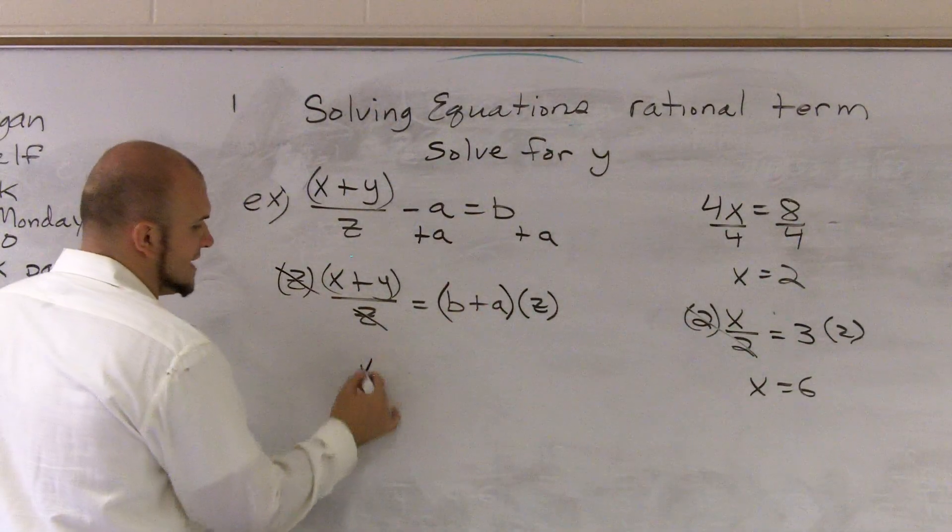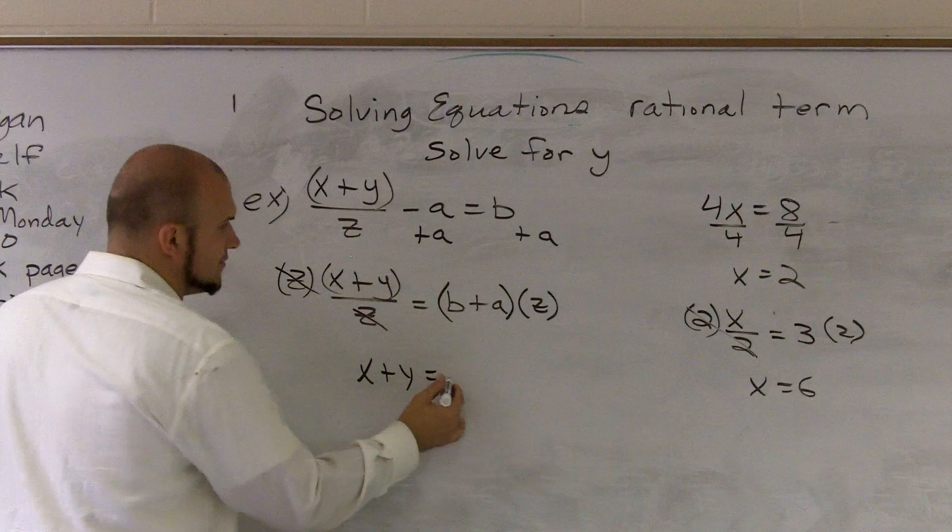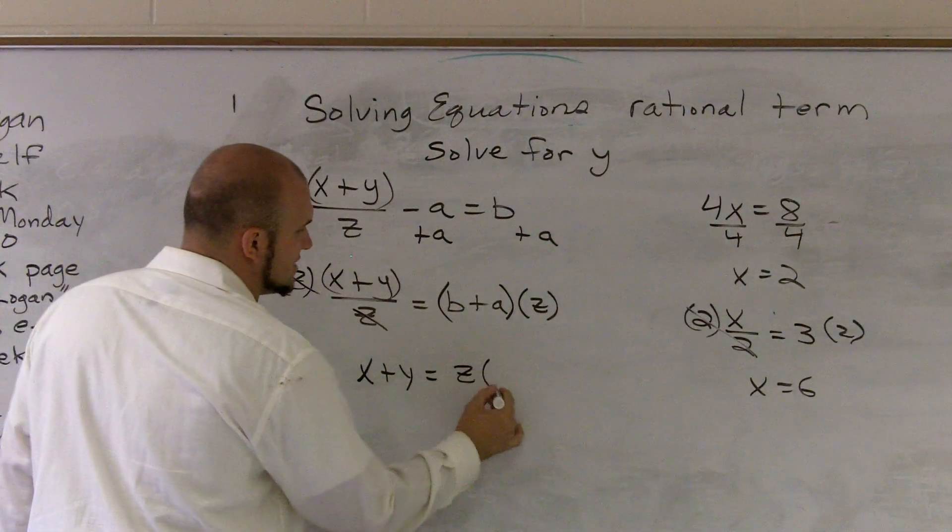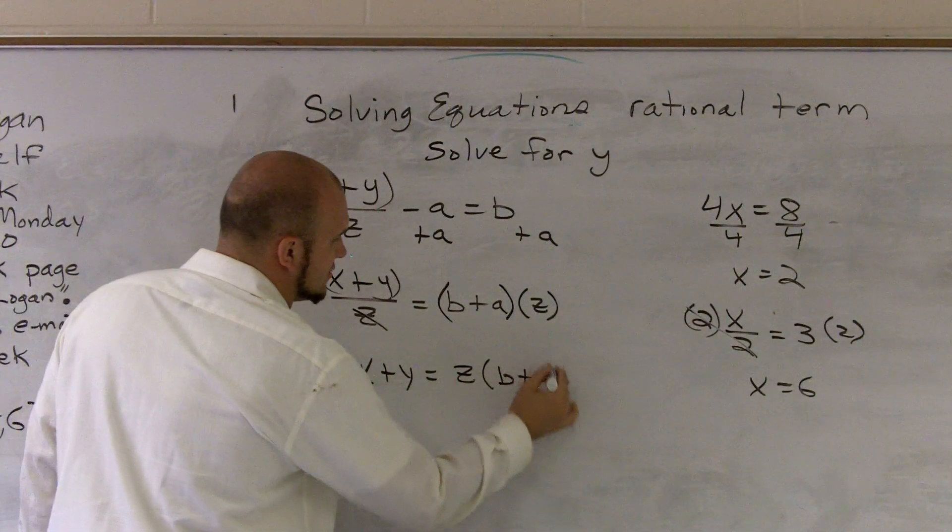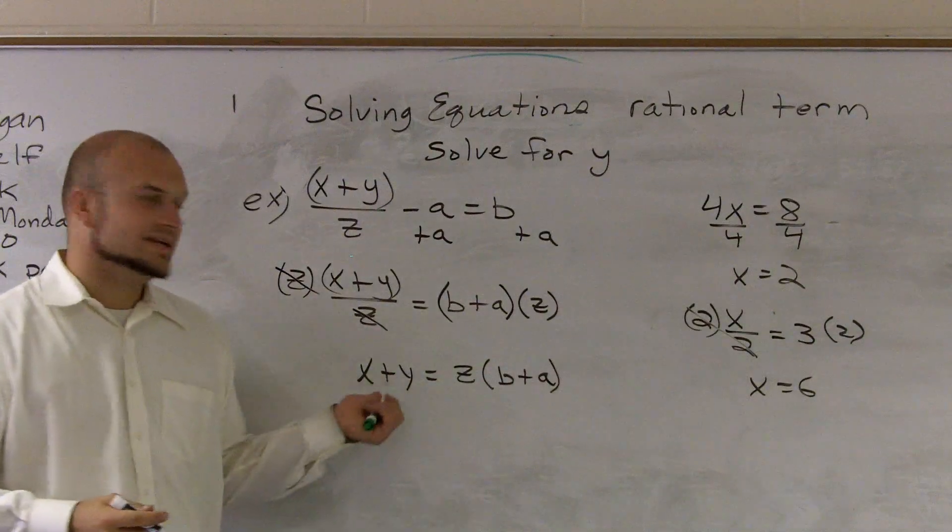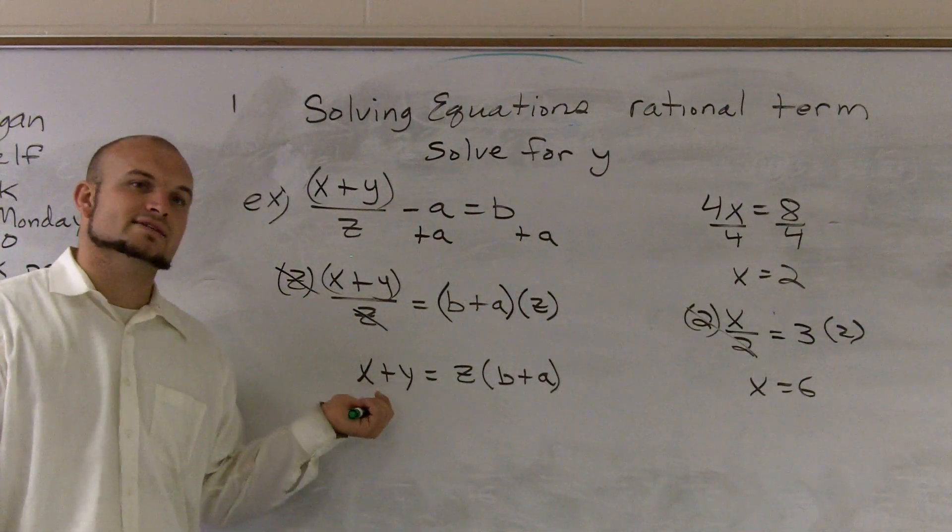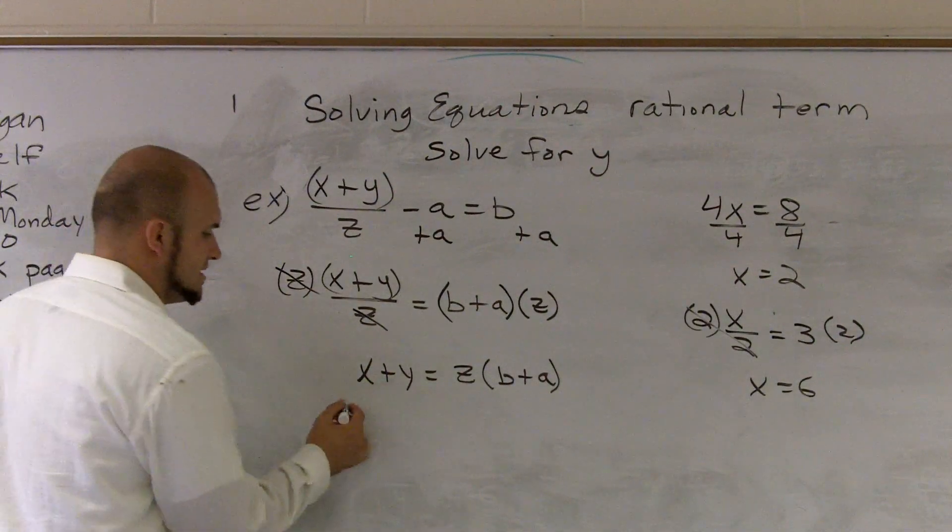Now, I'm left with x plus y equals, and I'm going to write the z in front, because it still doesn't represent the same thing. Then, we need to solve for y, guys, so we need to get rid of this x. So I'll just subtract the x.